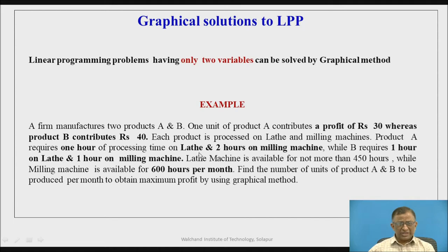Each product A requires one hour of processing time on the lathe and two hours of processing time on the milling machine. Similarly, product B requires one hour on the lathe and one hour on the milling machine. This is the resource requirement per unit of each product.